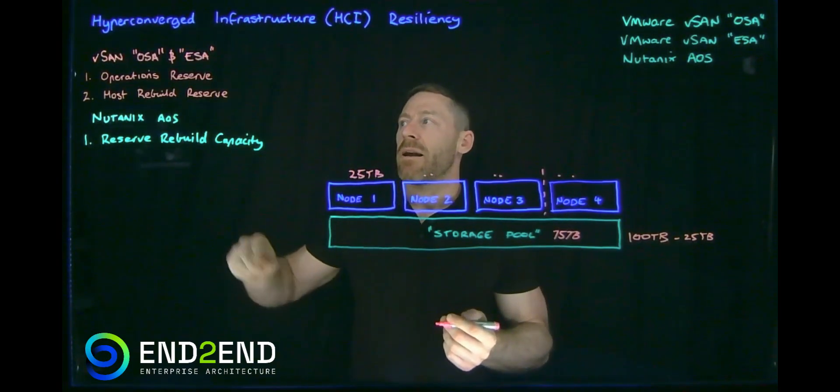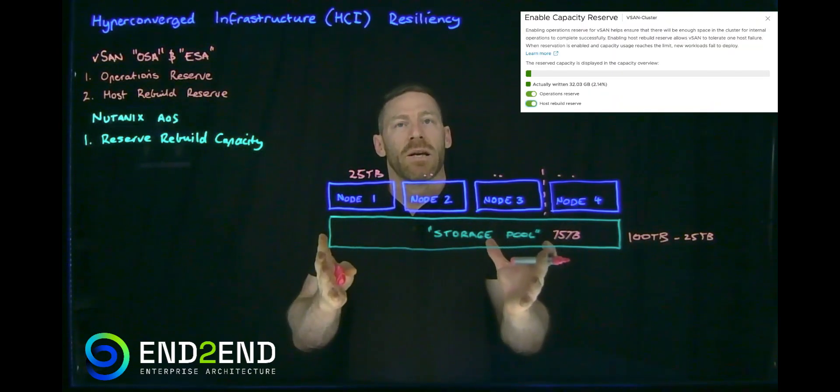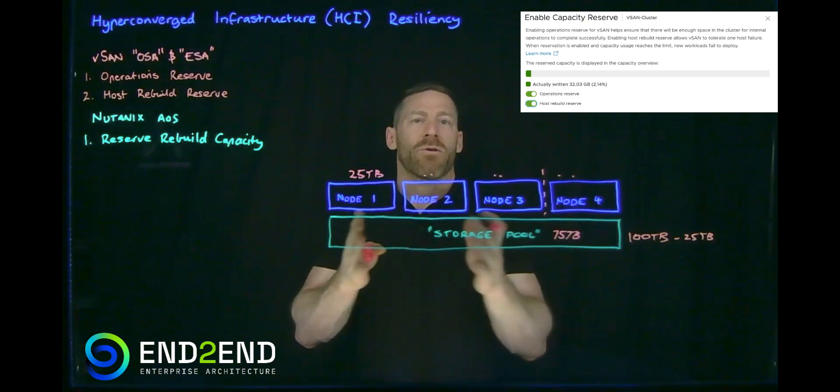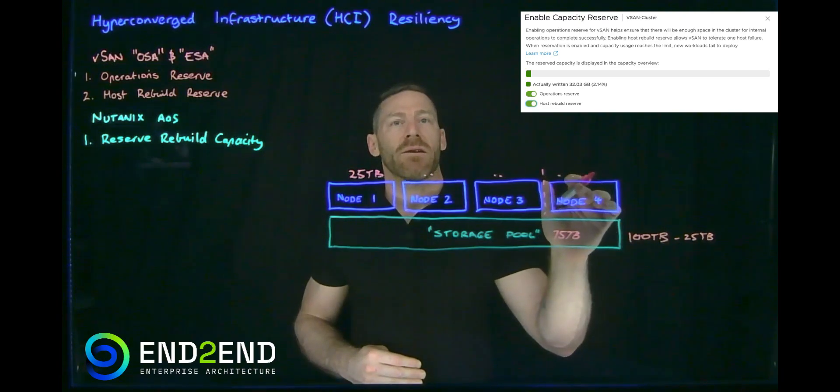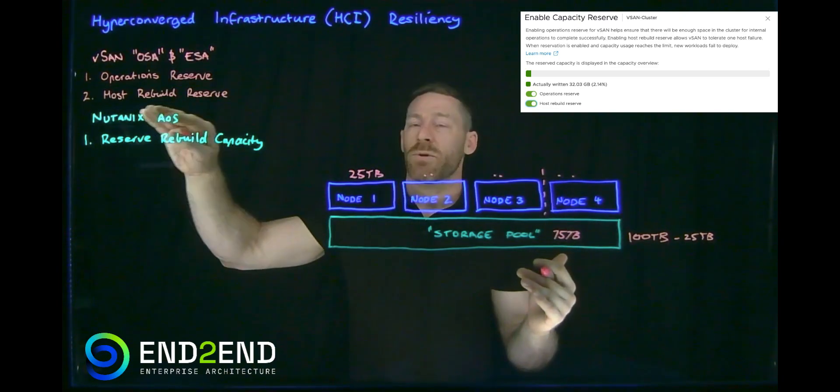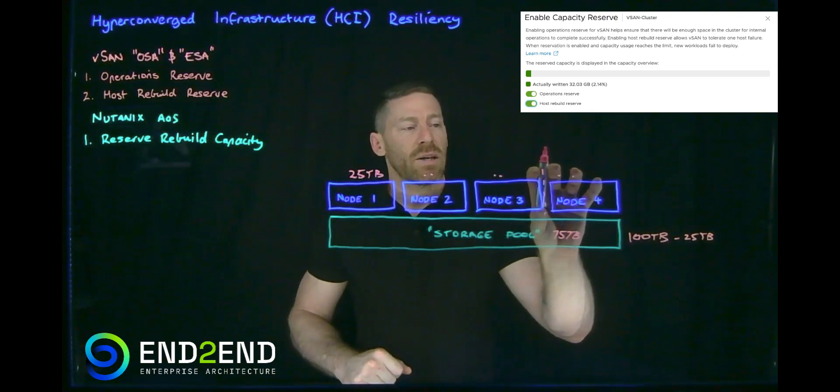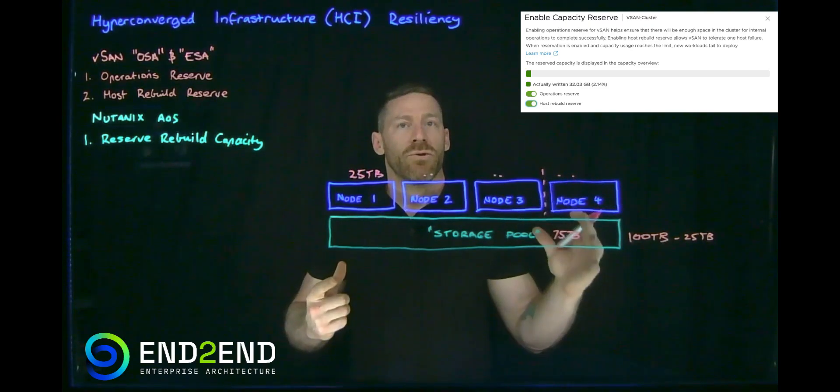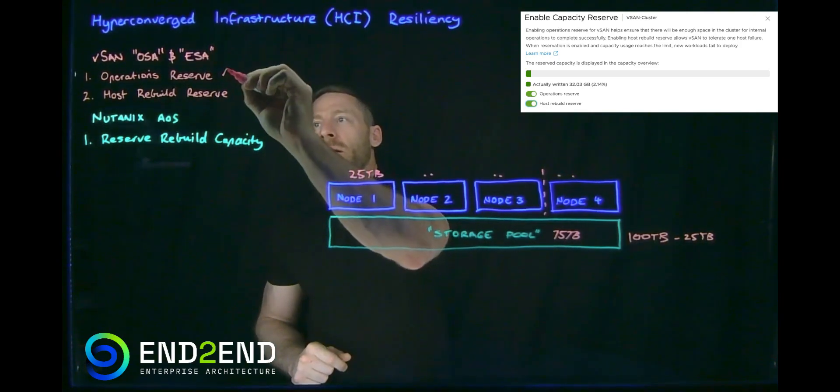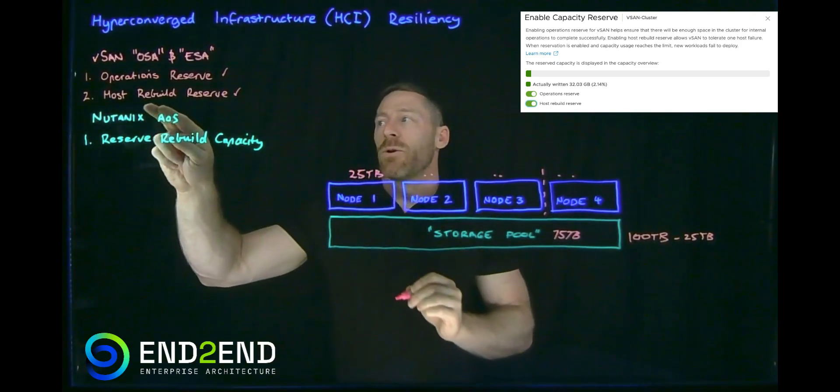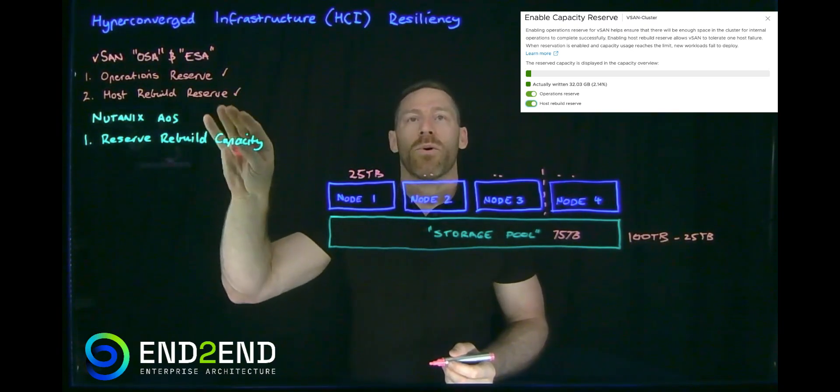So starting with vSAN, we have what's called the operations reserve, which is a very small amount of reserve capacity to enable balancing across nodes and things like that. So it helps us but it doesn't protect us from the failure scenario of losing a node. So there's another option which does just that, which is called the host rebuild reserve, which effectively reserves that node's worth of capacity to tolerate failures. So highly recommended that you enable both of these. In fact, to enable host rebuild reserve, you must also have operations reserve enabled. So very important we do this.